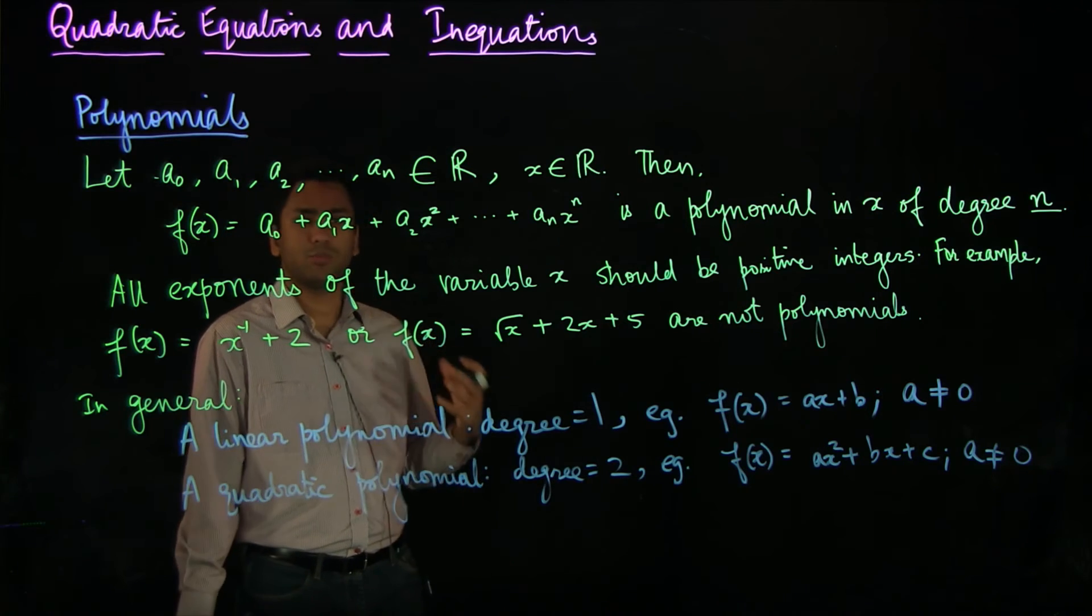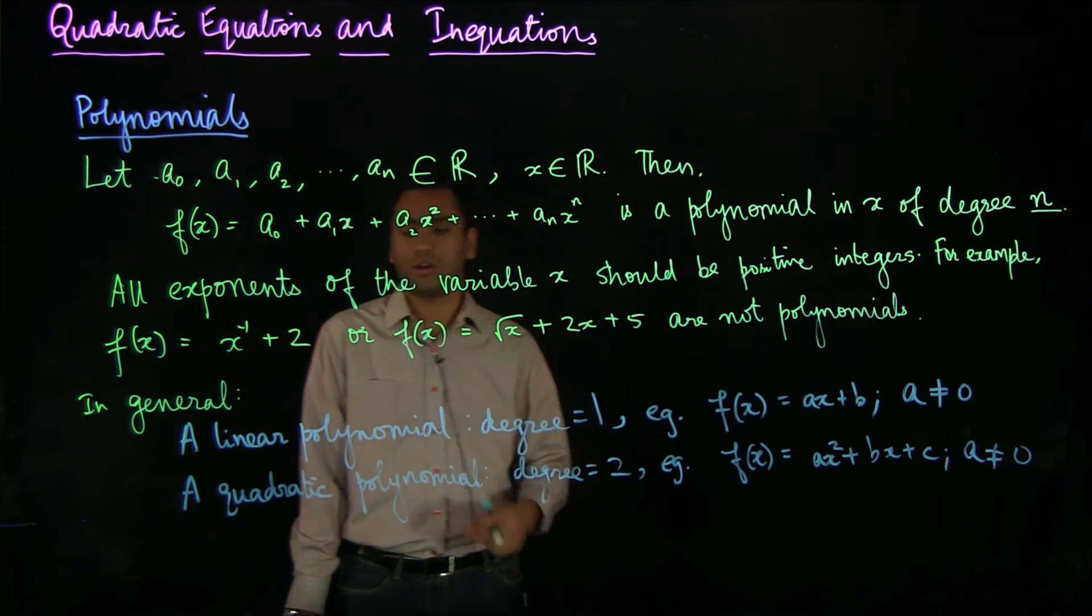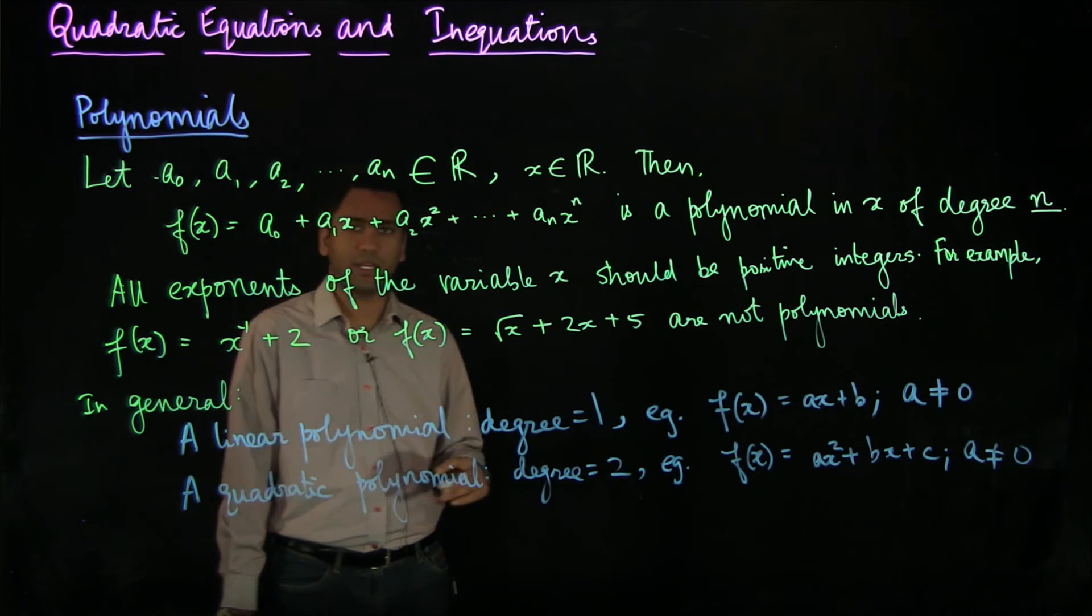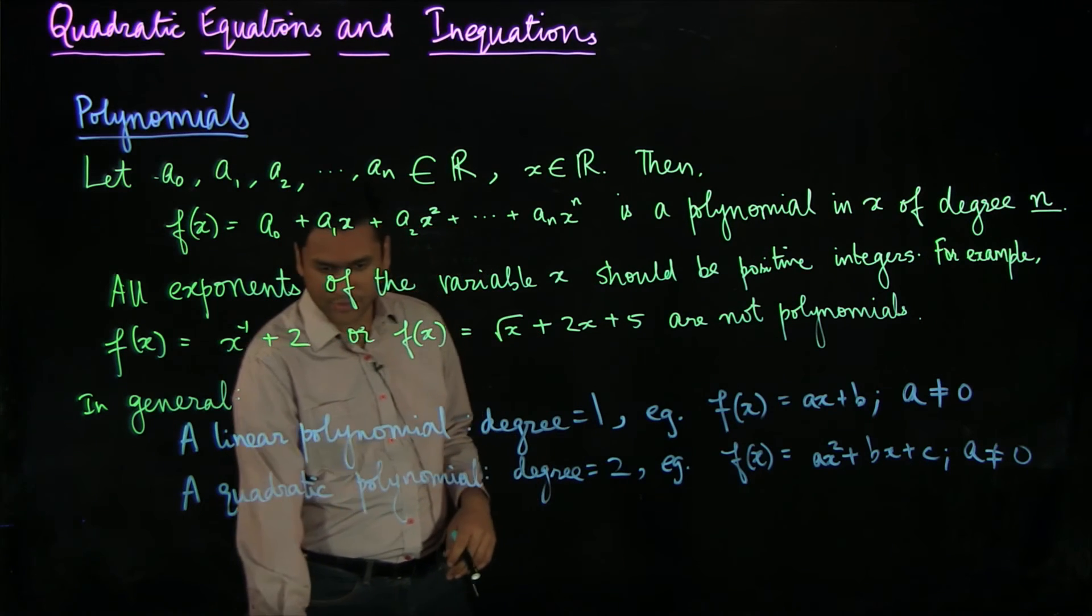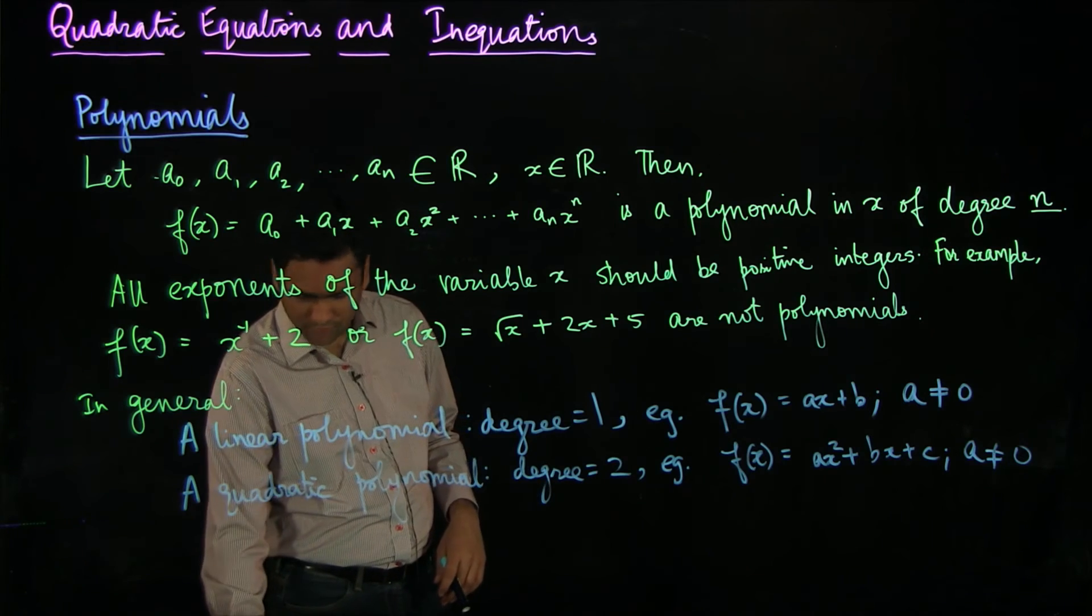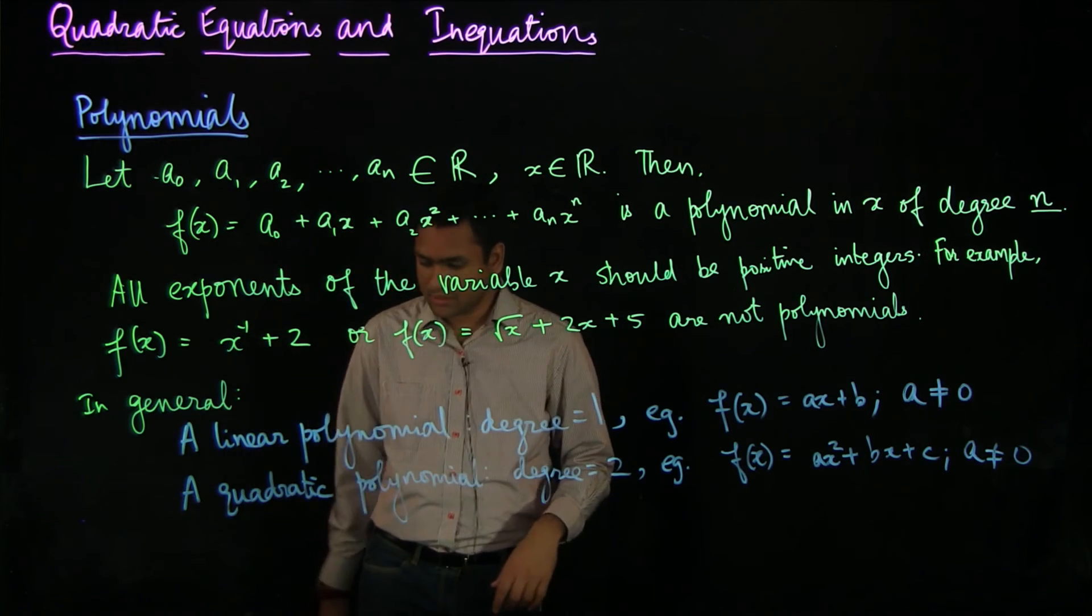Similarly, you could have a cubic polynomial where the degree is 3 or you could have a biquadratic polynomial where the degree is 4 and so on and so forth. These are the different classes of polynomials.